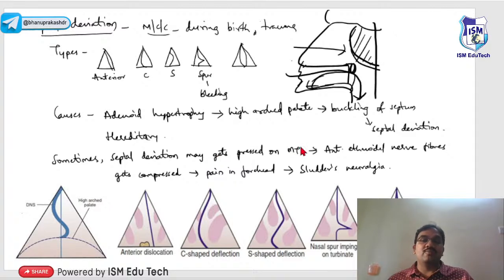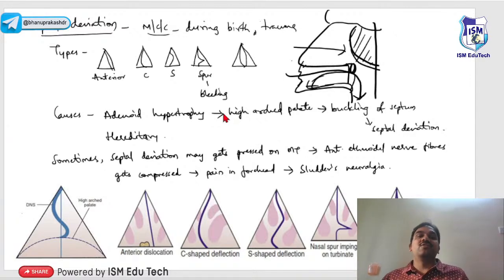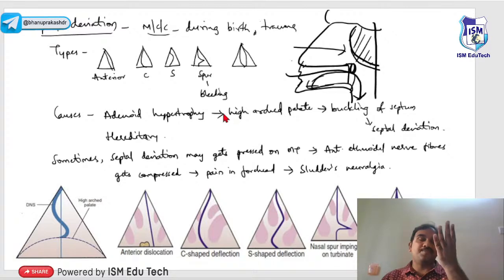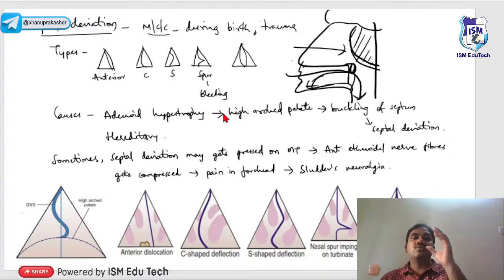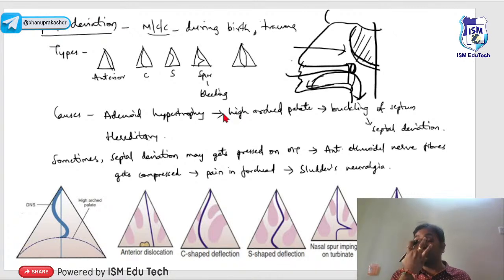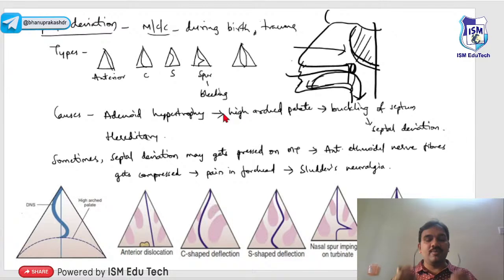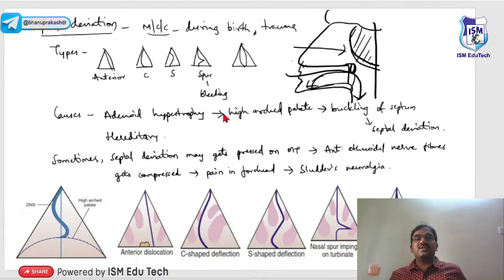Sometimes the deviated septum presses on the middle turbinate, compressing the anterior ethmoidal fibers and causing forehead pain. This pain worsens in cold temperatures when the turbinates swell. When the deviated septum compresses the swollen middle turbinate, the ethmoidal nerve gets irritated. This condition is called anterior ethmoidal neuralgia or Sluder's neuralgia.